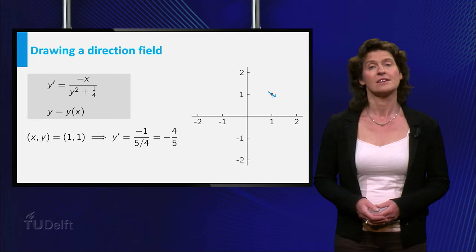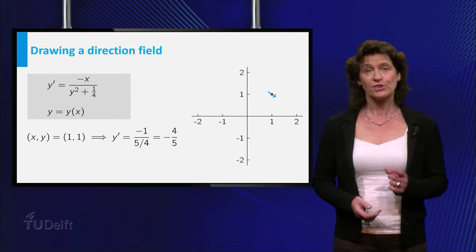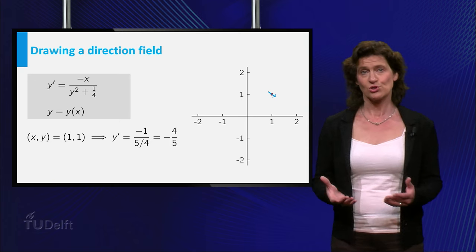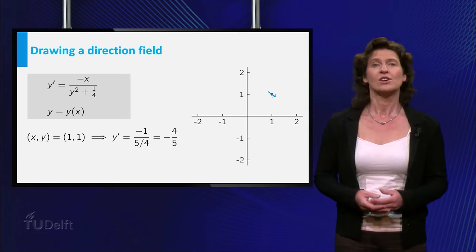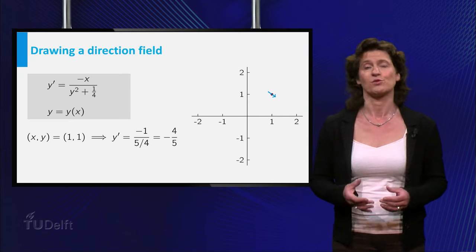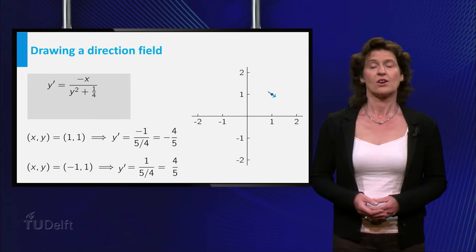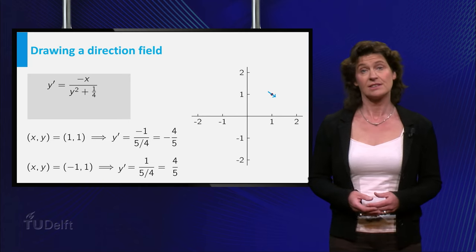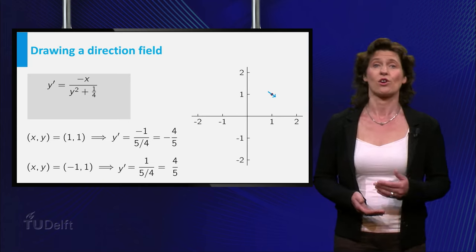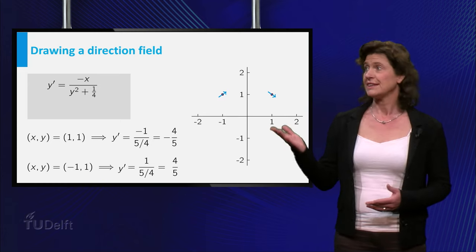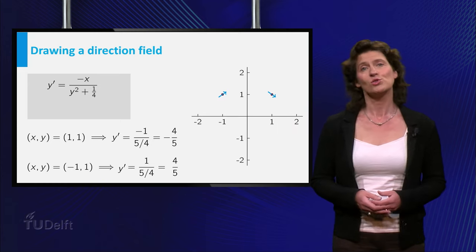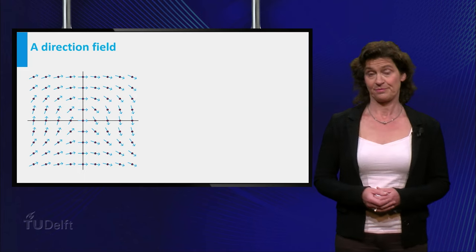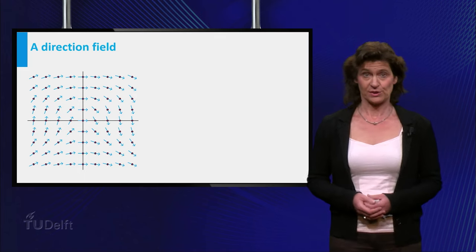So without having solved the differential equation, without knowing the explicit formula for the solution, you found the slope of the graph of the solution at x equals 1. For the point minus 1, 1, the slope of the tangent is equal to plus 4 over 5. Here it is. You can do this for many other points and get this beautiful picture. This is called the direction field.